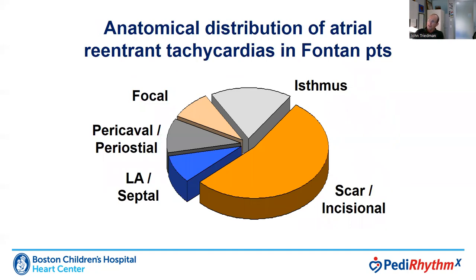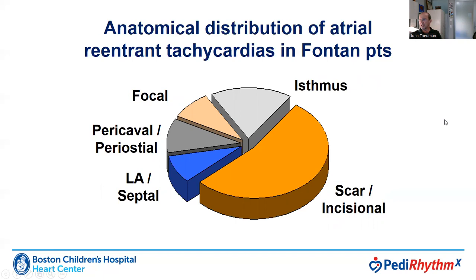When we think about the anatomical distribution of atrial reentrant tachycardias in Fontan patients, we know that a fair number may be related to scars and incisions, but some will also be related to isthmus. In addition, we'll see some focal tachycardias, usually with a micro reentrant pattern, as well as pericaval, periostial, and occasionally left atrial or septal tachycardia.